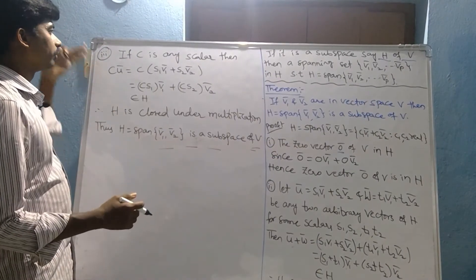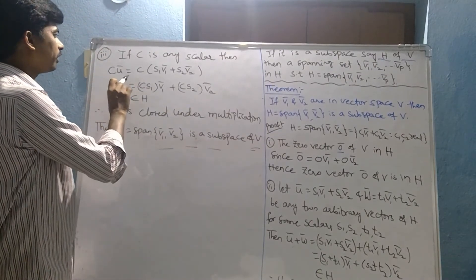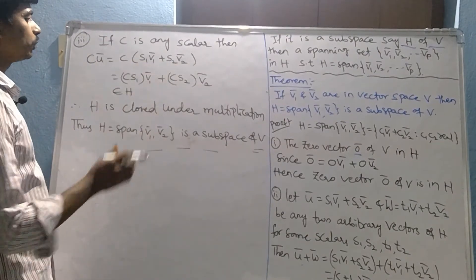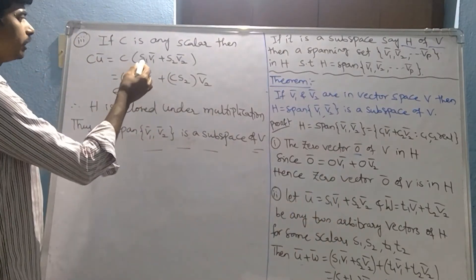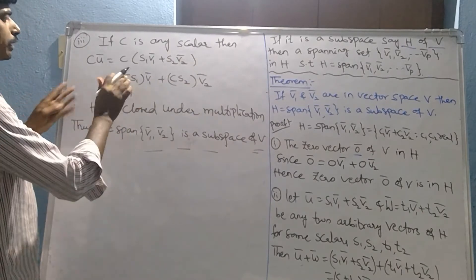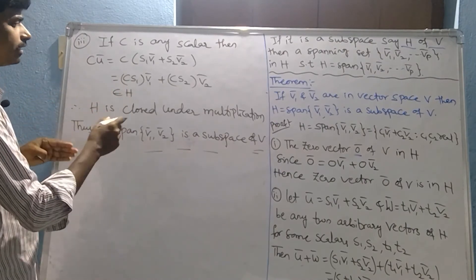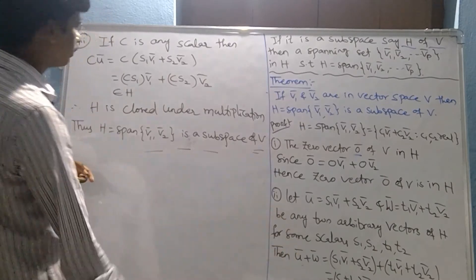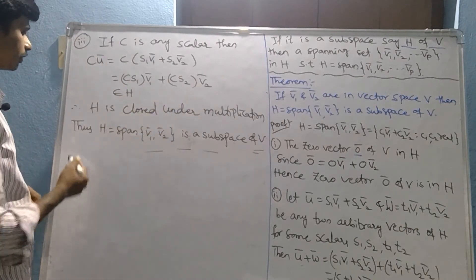Now the third property we are using here. If C is any scalar, then C U bar equals C into (S1 V1 bar plus S2 V2 bar). Now see here, U bar equals this one we have taken. C into S1 V1 bar plus C into S2 V2 bar. Here C into U bar we are considering, this belongs to H. Therefore, H is closed under multiplication. Now zero vector, closure under addition, and closure under multiplication, these three properties are completed.